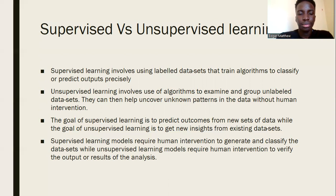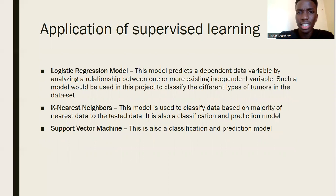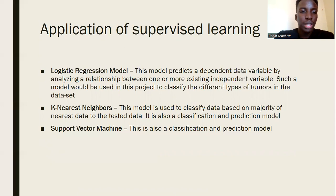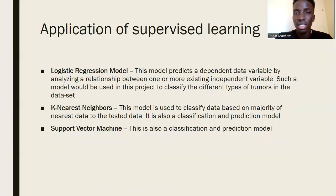How are we going to apply supervised learning in this project? First, using the logistic regression model to predict a dependent variable by analyzing the relationship between one or more independent variables — this model will classify the different types of tumors in the data set. Then, with K-nearest neighbours and the support vector machine, we shall classify the different tumor dimensions and predict new tumors to determine whether they are cancerous or non-cancerous.